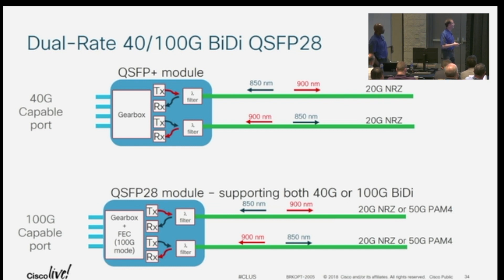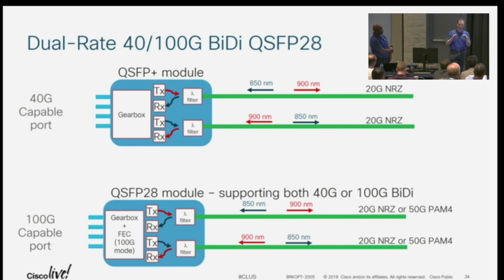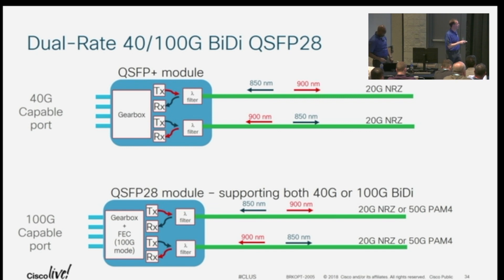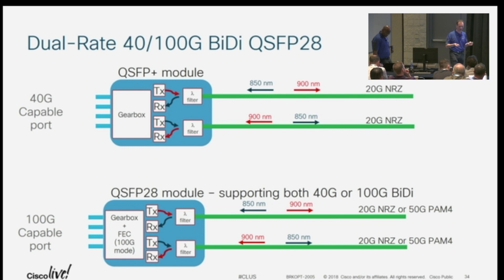Bringing this together, the other technology tool we can use is BiDi — bi-directional. We talked about putting multiple wavelengths on a fiber; this is putting one wavelength on a fiber going one direction and another wavelength going the other direction. This allows us to use parallelization to support customers that don't have extra fibers in their networks. We've been shipping 40-gig BiDi for a while in the multimode space — 20 gig on each fiber in both directions. We recently announced 100-gig BiDi, which also does 40-gig and can software-select back and forth, using 50-gig PAM4 modulation instead of 20-gig NRZ.